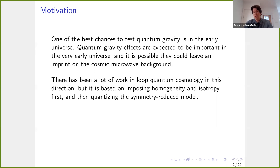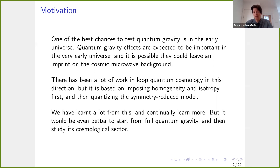There's been a lot of work in loop quantum cosmology looking at quantum gravity effects in the early universe. But this is really based on imposing homogeneity and isotropy first on the classical theory, and then quantizing this simpler model. This has been very productive. But clearly, it would be even better if we could start from full quantum gravity and then reduce down to its cosmological sector — quantize full gravity without imposing symmetries first, and then see what we get.